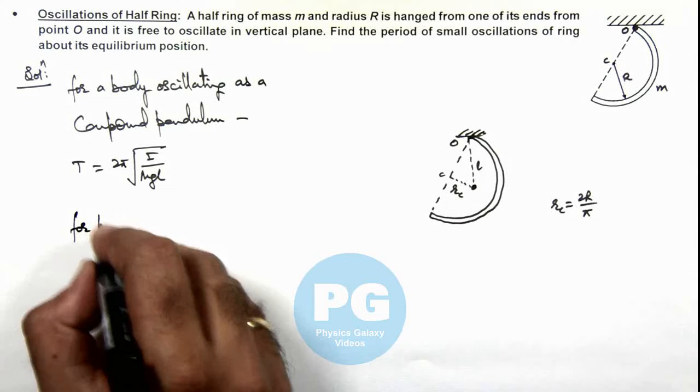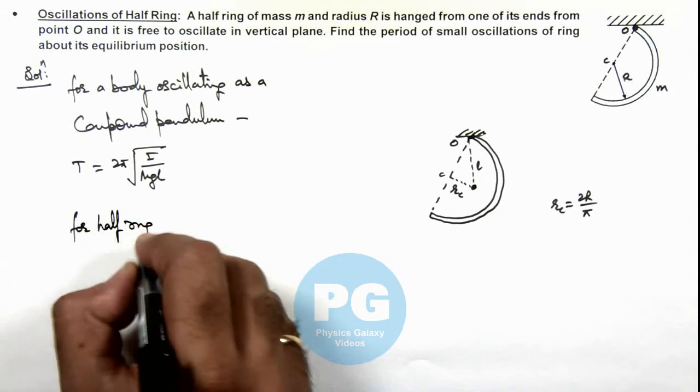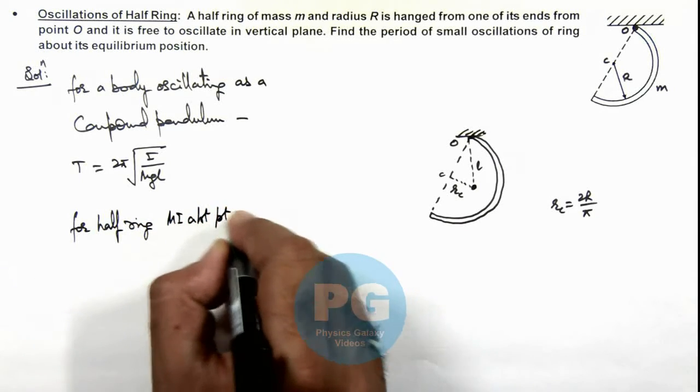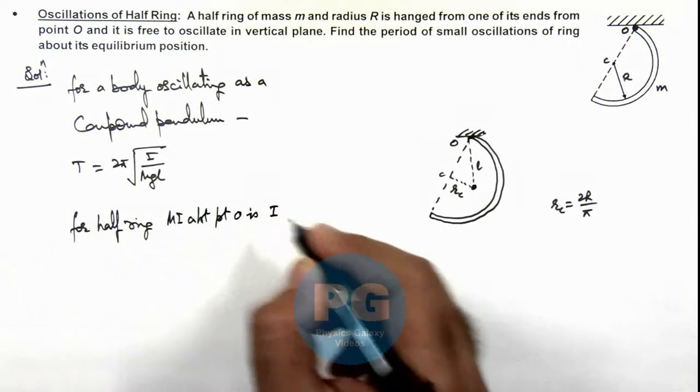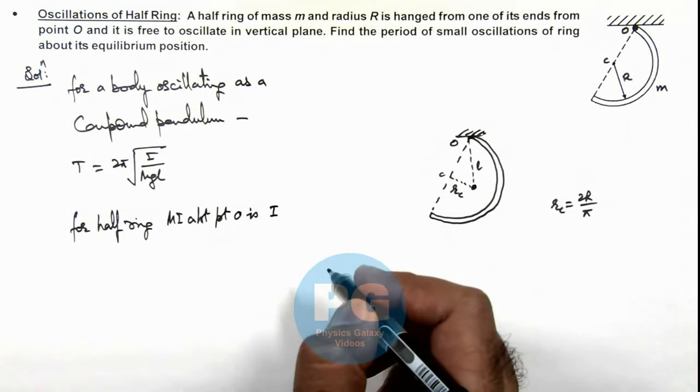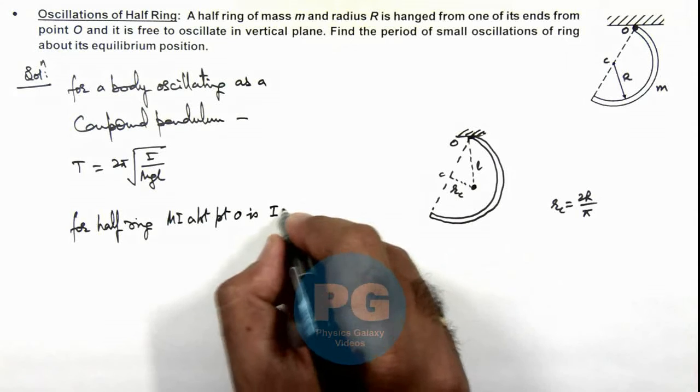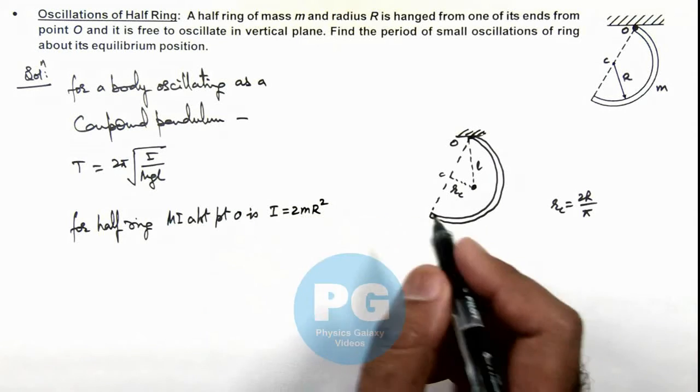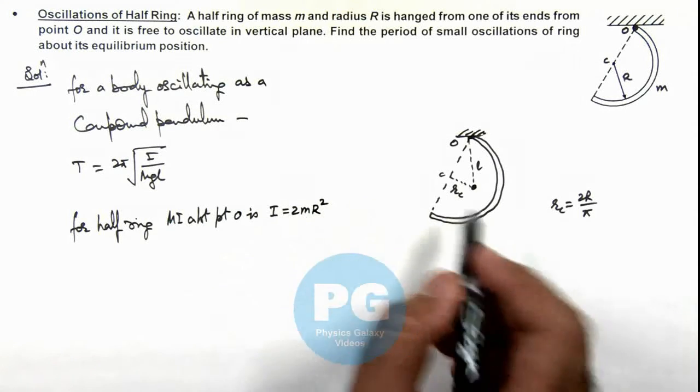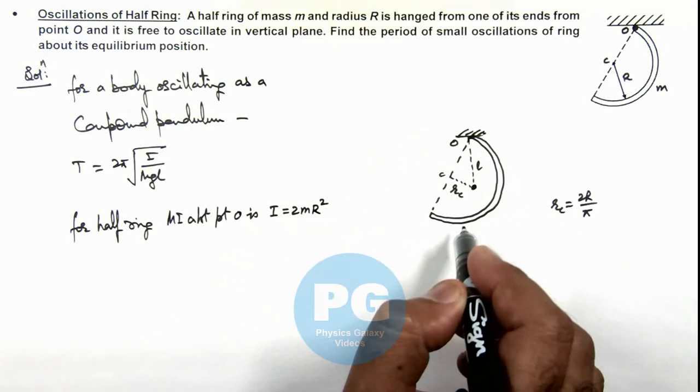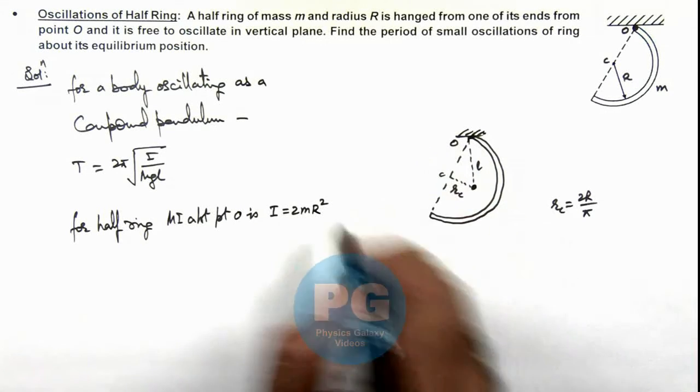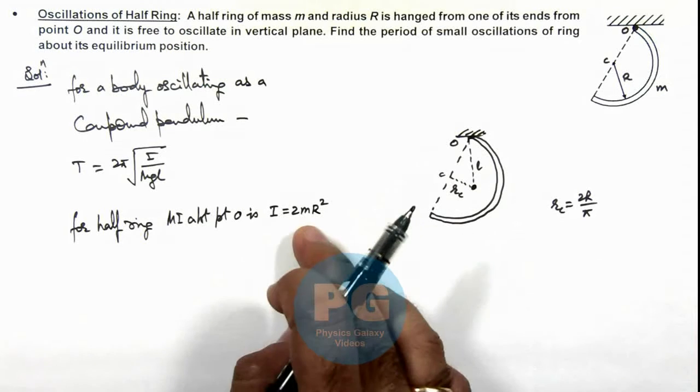For half ring, moment of inertia about point O, this we already studied in the concept videos of moment of inertia, so that can be directly written as I = 2mr², as we have studied. In rigid body dynamics, for a complete ring if it is divided in two identical parts, the expression of moment of inertia remains the same.